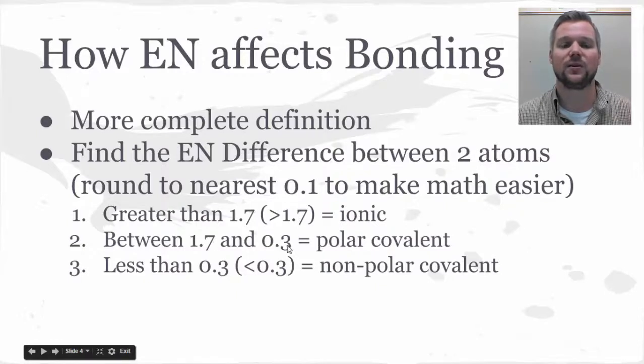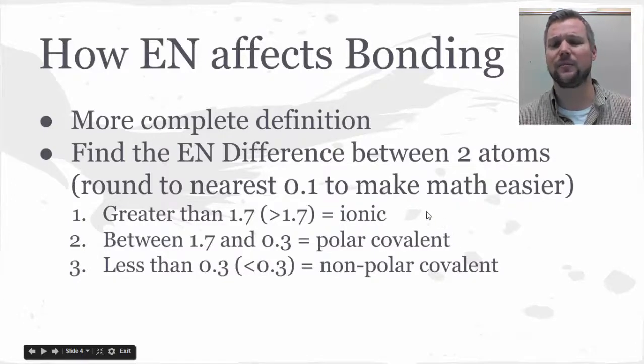If it falls between 1.7 and 0.3, including 1.7 and 0.3, it's going to be a polar covalent bond. And then if it's less than 0.3, this is a non-polar covalent bond.